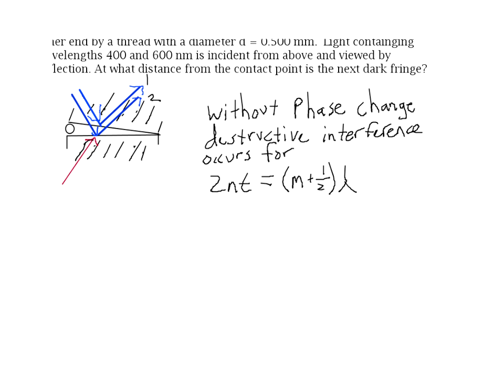You may be wondering why we don't have to worry about light bouncing off the top of the first glass plate. That's because the glass plate is very thick compared to the wavelength of light — even if it were only one millimeter thick, it's still many times thicker than the wavelength of light, so we generally won't get interference from it. The wedge, however, has a thickness on the same order of magnitude as the wavelength of light, which is why we get interference from it.